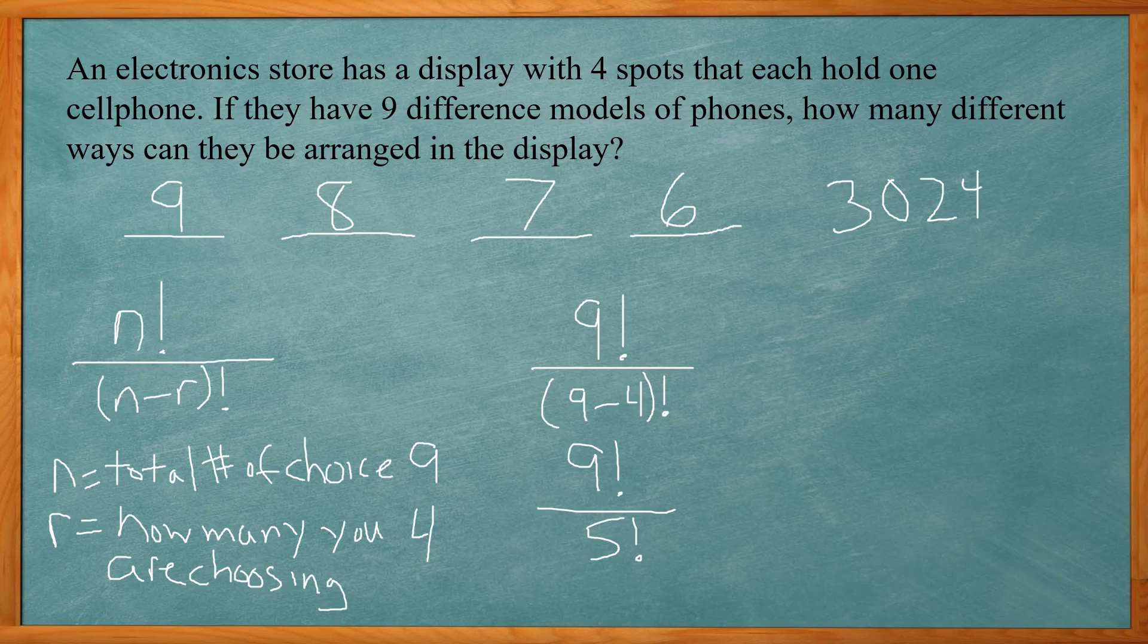Otherwise, you can reduce it. So nine factorial is the same as nine times eight times seven times six times five factorial.